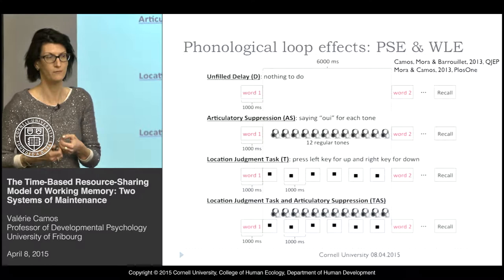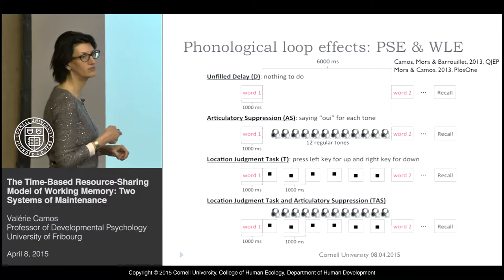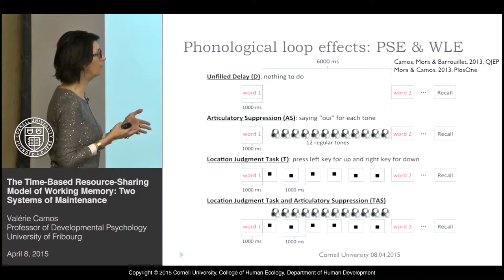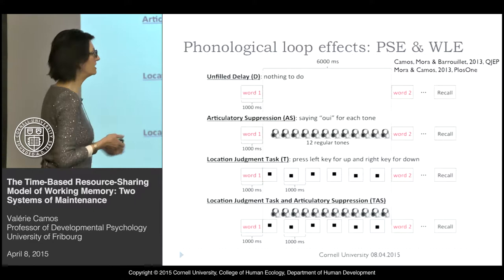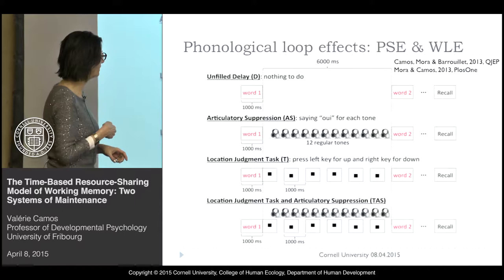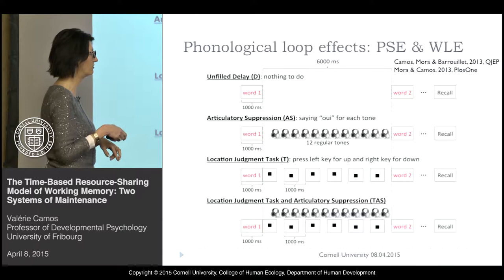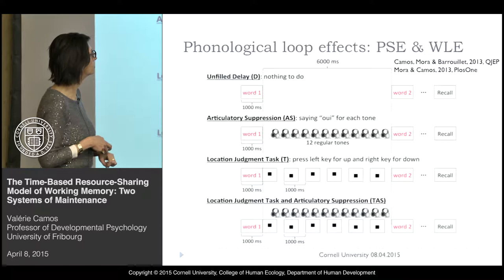In a similar design, we also manipulated these two different factors by presenting lists of phonologically similar versus dissimilar words, and orthogonally varied the implication of the central system and of the phonological loop. We varied the attentional system by either having nothing to do — the no cognitive load condition — or asking participants to do a location judgment task where squares are either up or down on screen, a very subtle difference requiring participants to be very careful and respond by pressing keys. This is the manipulation of cognitive load.